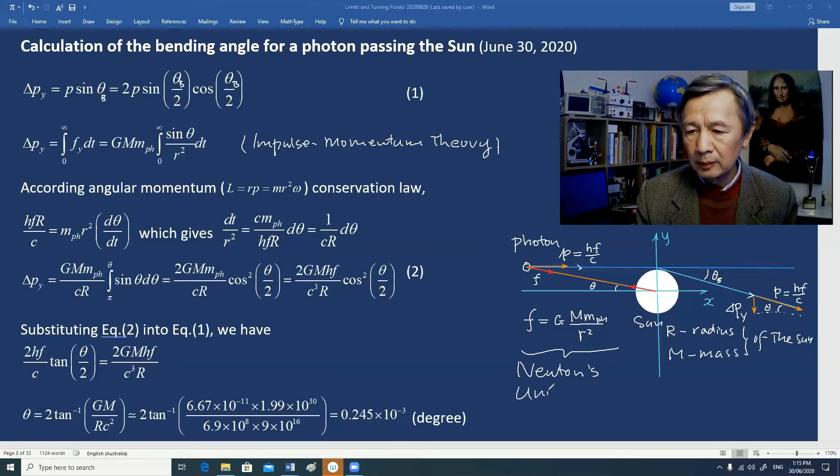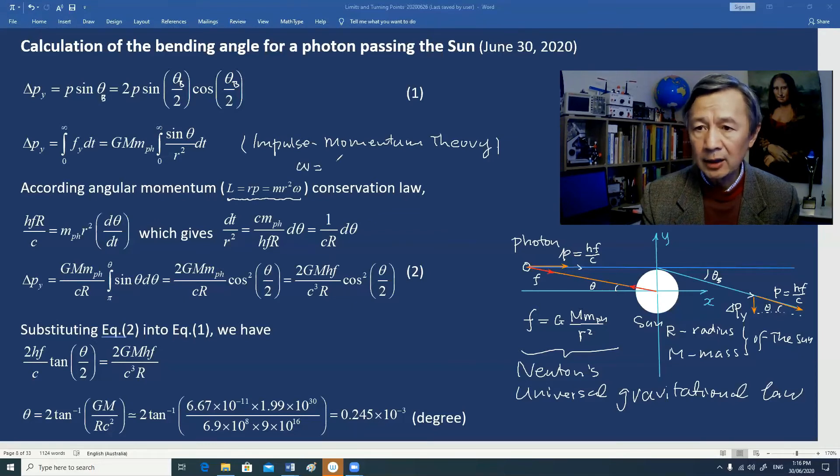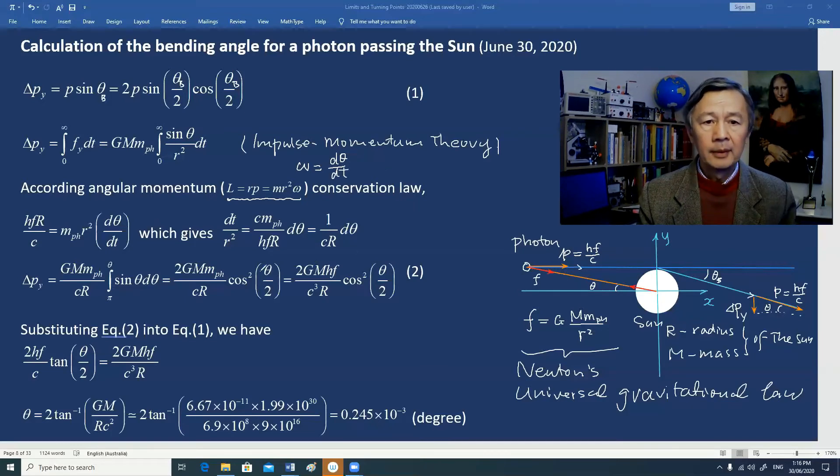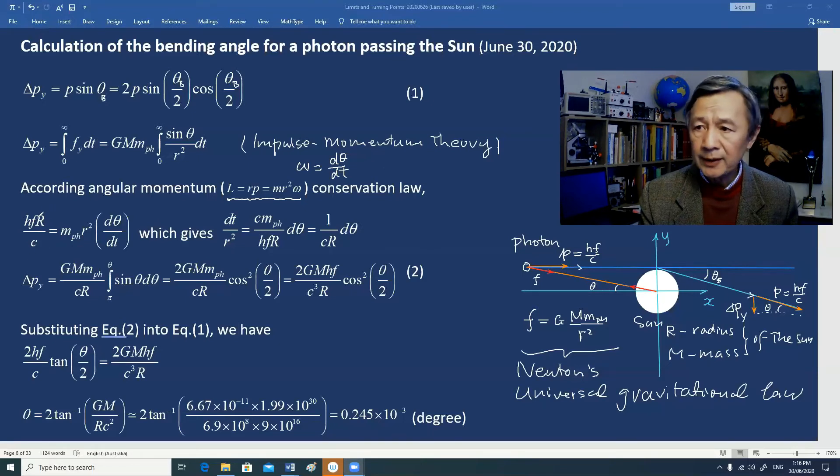By definition, this is the angular momentum, where omega is angular velocity d theta dt. The left hand side represents the initial angular momentum of the photon, and the right hand side represents angular momentum at any moment. In this way, we can calculate the change in the Y component of photon momentum after bending.